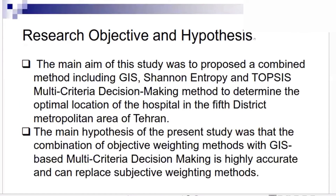The research objectives and hypothesis: the main aim is to combine different mechanisms including GIS, entropy, and the TOPSIS method for decision-making in order to achieve the optimum site selection of a hospital in District 5 of Tehran. The hypothesis is that the combination of this objective weighting approach — GIS, multi-criteria, and entropy — can assist in a more accurate determination of new hospital sites and provide objective weighting functions.